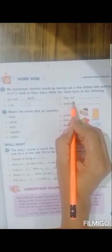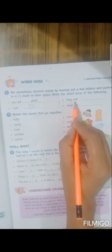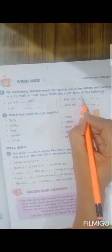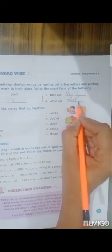Third word is they will. They will be written complete spelling. And for will, we will put an apostrophe and write L-L like this. T-H-E-Y, apostrophe, L-L. What will. Similarly, what will be written completely, put an apostrophe and L-L for will.